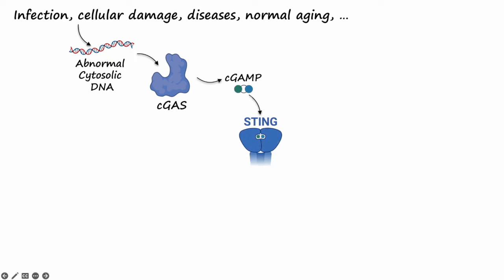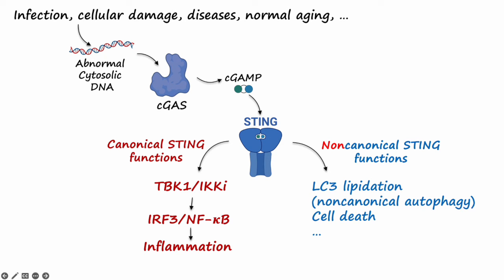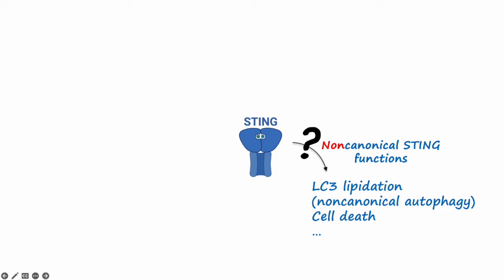The cGAS-STING pathway is a major innate immune pathway activated by abnormal cytosolic DNA exposure in many conditions. STING refers to stimulator of interferon genes. As you can tell from its name, canonical functions of STING include the upregulation of interferons and inflammatory cytokines, mediated through TBK1 signaling. STING also has non-canonical functions, such as non-canonical autophagy and STING-dependent cell death. However, it has been unclear how STING activates its non-canonical functions.